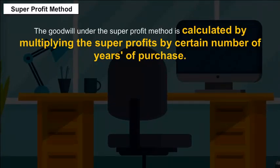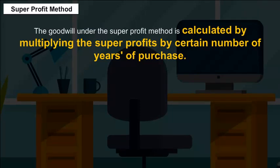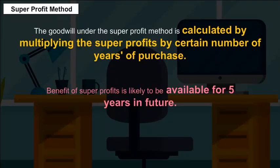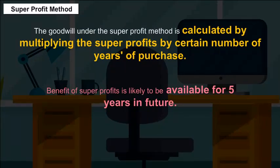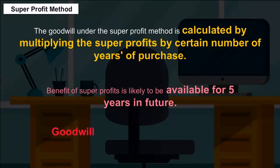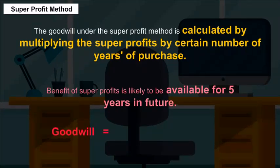If in the above example it is expected that the benefit of super profits is likely to be available for 5 years in future, the goodwill will be valued at Rs. 10,000 (Rs. 2,000 × 5).